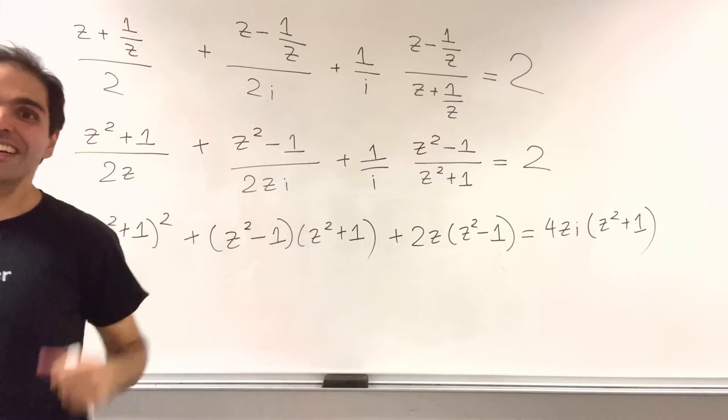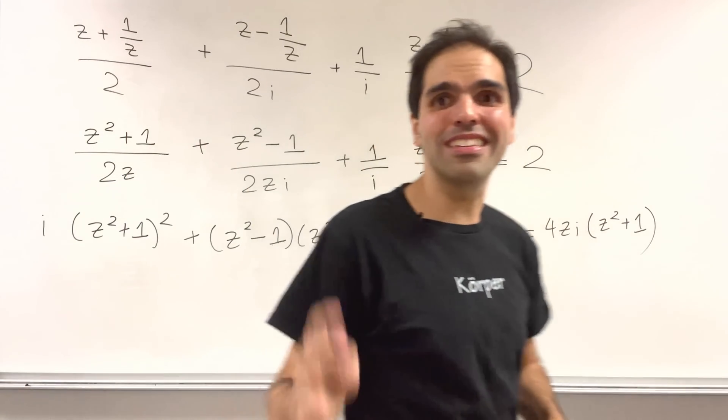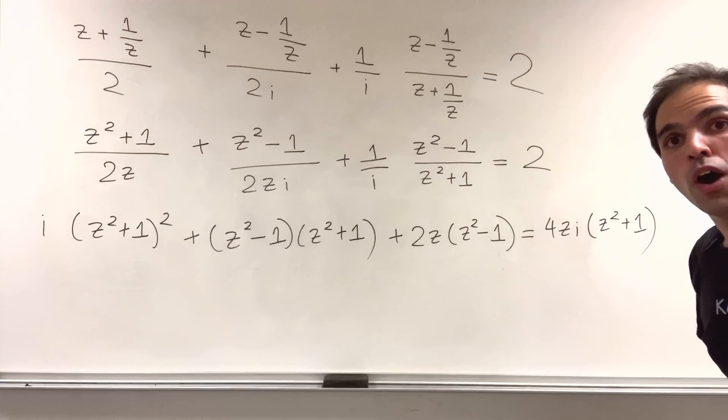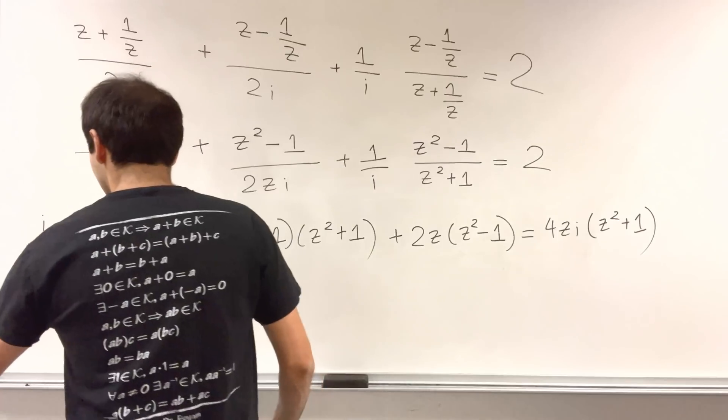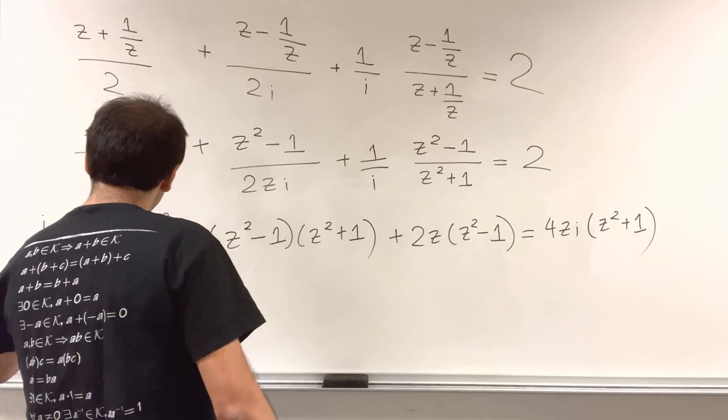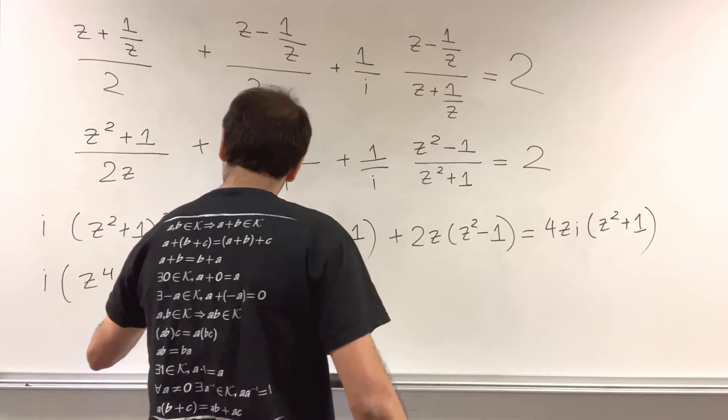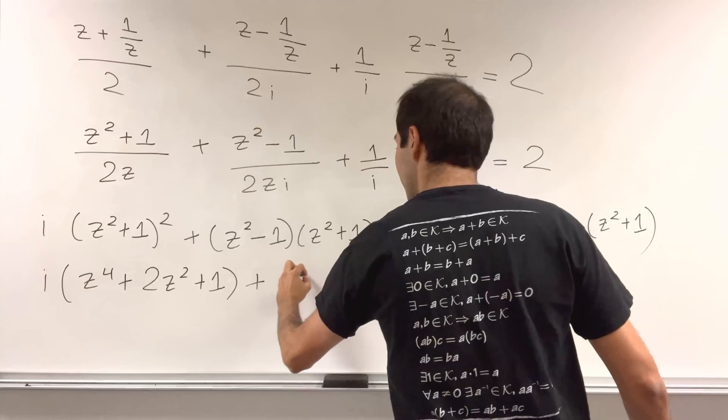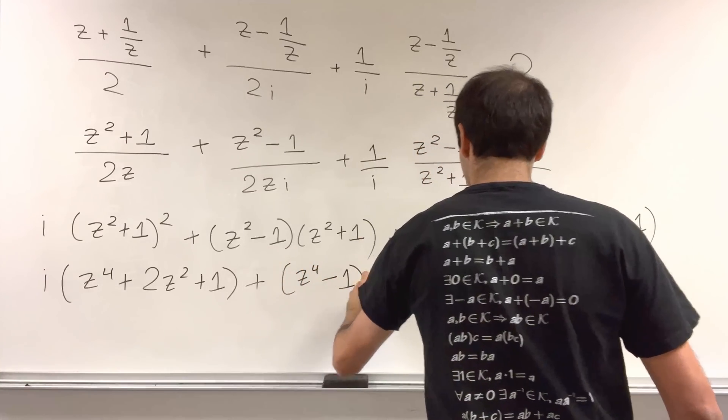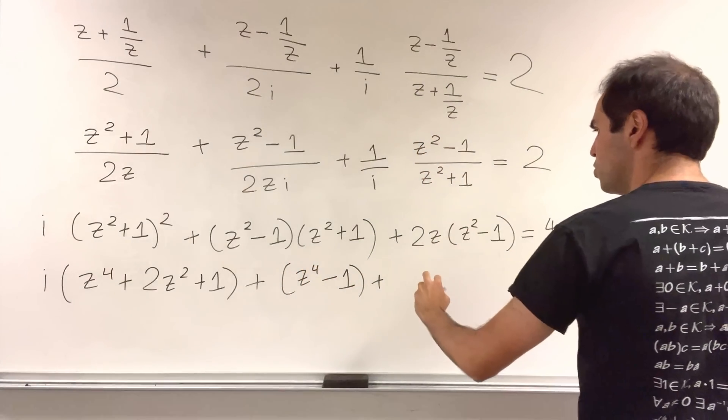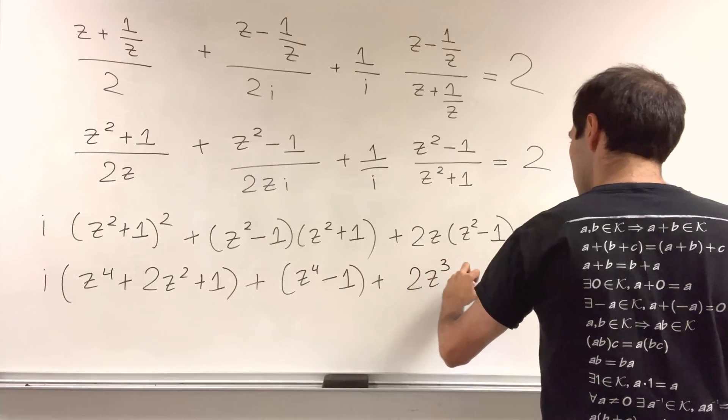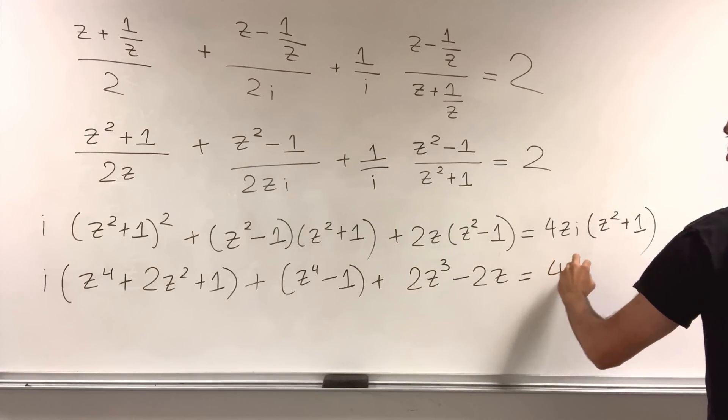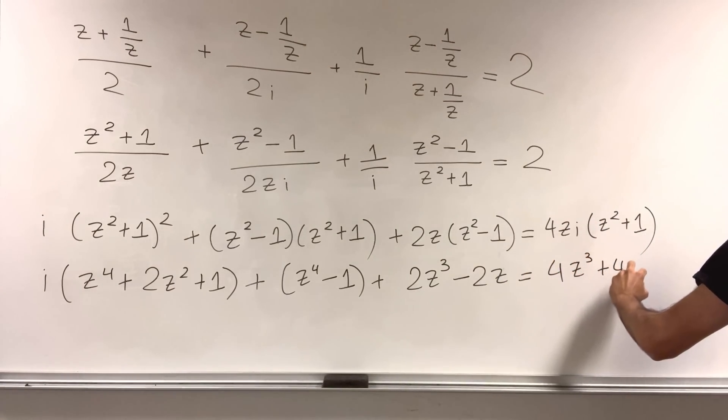And it looks pretty complicated, but still, it is doable. That's a nice thing. And now, let's just expand everything out to get a polynomial. So then you get i times z to the fourth plus two z squared plus one, and then plus z to the fourth minus one, and then plus two z cubed minus two zi. And that becomes four z cubed plus four zi.